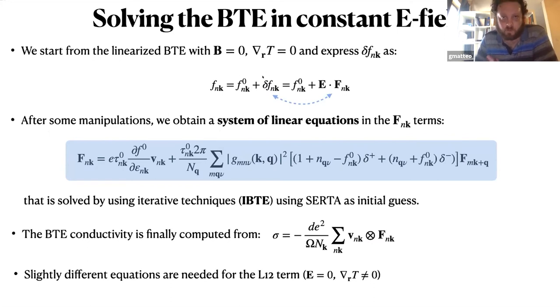Obviously, we have to focus on some simple problems. So again, zero magnetic field, no temperature gradient, electric field spatially constant. We write the correction in terms of the scalar electric field times an unknown quantity. After some manipulations, we can rewrite the Boltzmann equation in terms of a system of linear equations. This matrix, in principle, is huge because we need a lot of k-points to converge the calculation. But thanks to the presence of these two delta functions, the matrix is sparse, and we can use iterative techniques to solve the problem. Once you have F, then you can compute the conductivity using this expression.